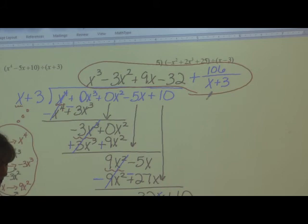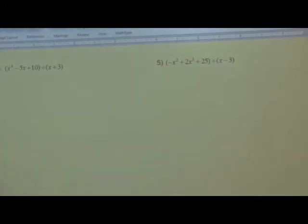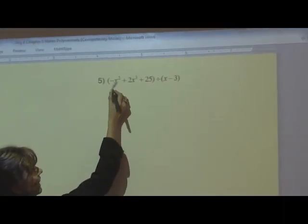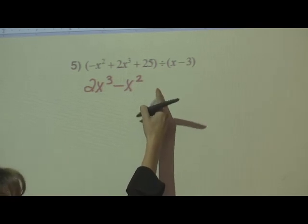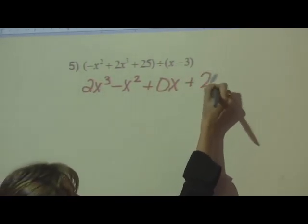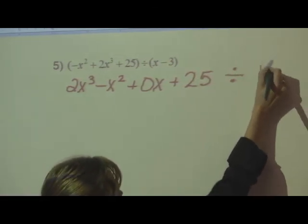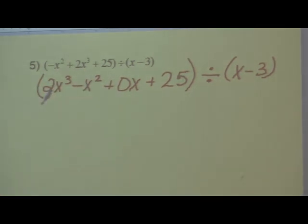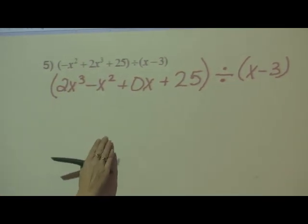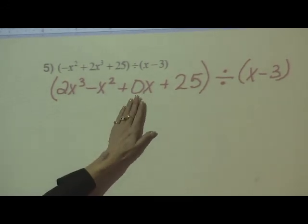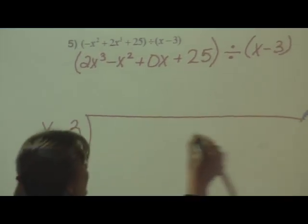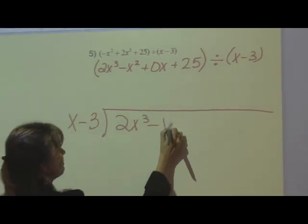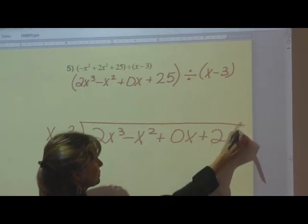Now, number 5 is the last one that we're going to do today. What I will have you do is set it up. Do you notice the order is messed up here? I need to change it. That's a 2x³ - x². Uh-oh, I'm missing x's, so I want to make sure I put +0x + 25, and that whole thing is divided by x - 3. So first I had to fix it. I put it in standard form, and I also made sure that I put placeholders in whenever possible. x - 3 is going to divide into 2x³ - x² + 0x + 25.